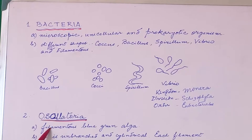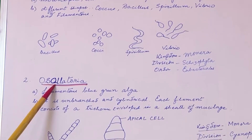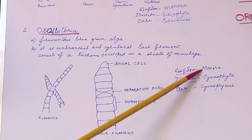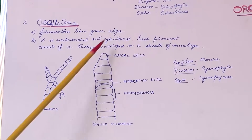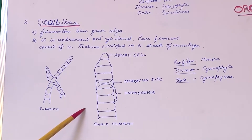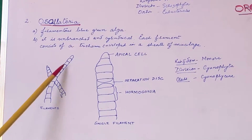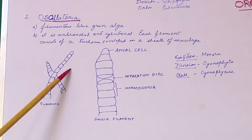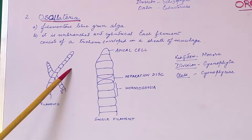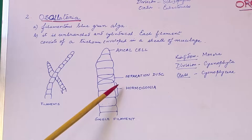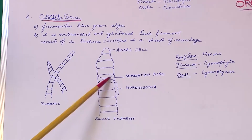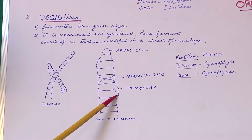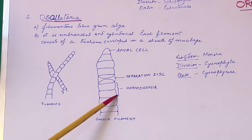Next we move on to Oscillatoria. Oscillatoria belongs to the kingdom Monera, but we call them blue-green algae. Blue-green algae are filamentous in nature but they are not branched at all. They have two significant features: presence of separation disc is visible, and a hormogonia structure is seen within the filament.